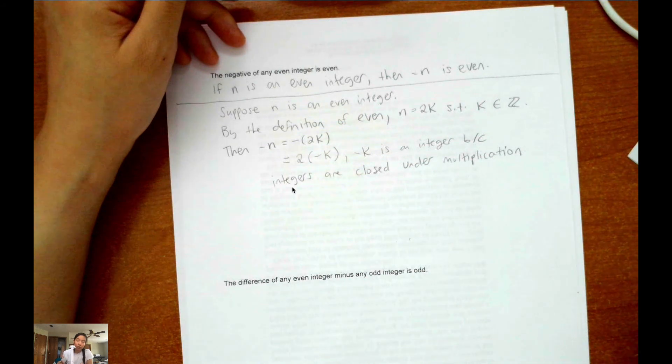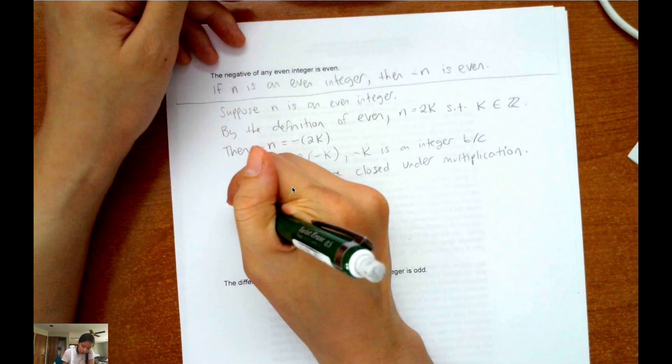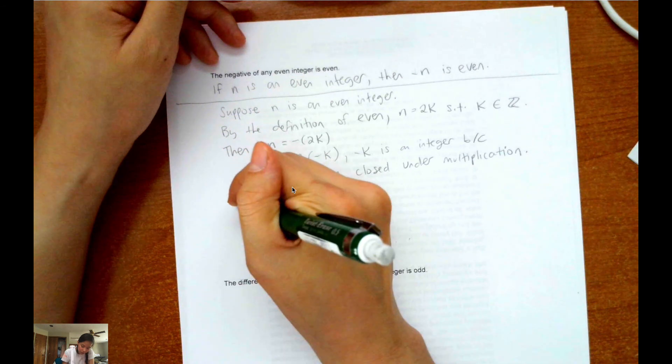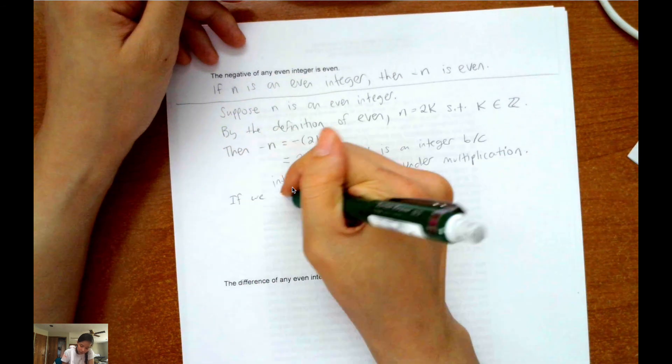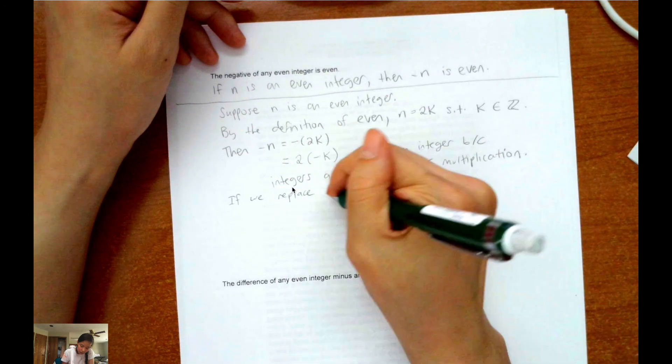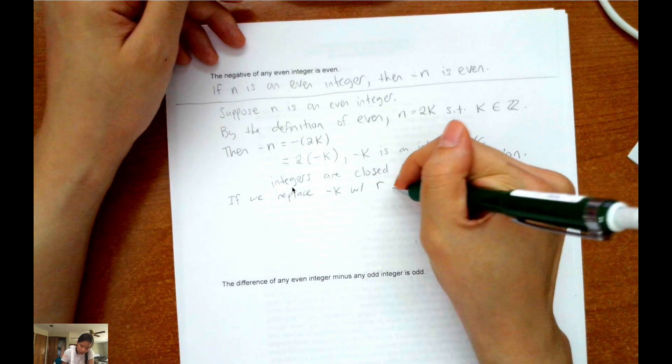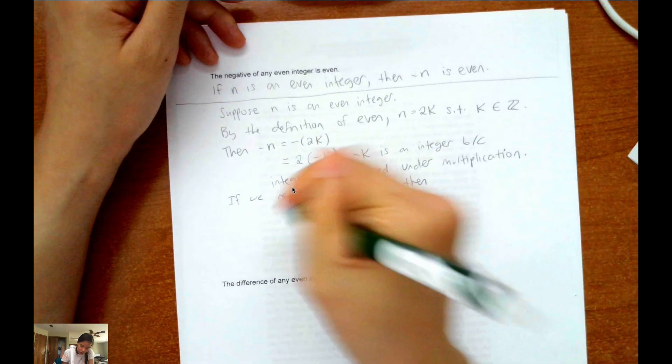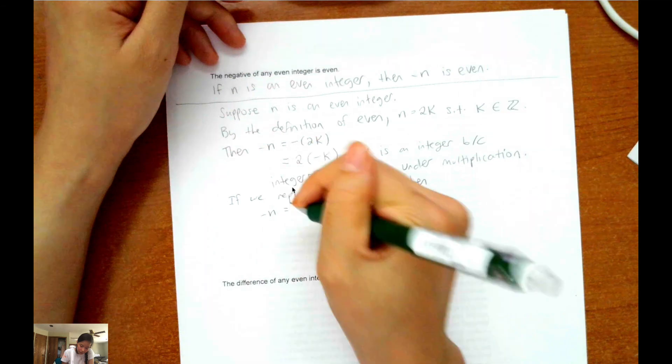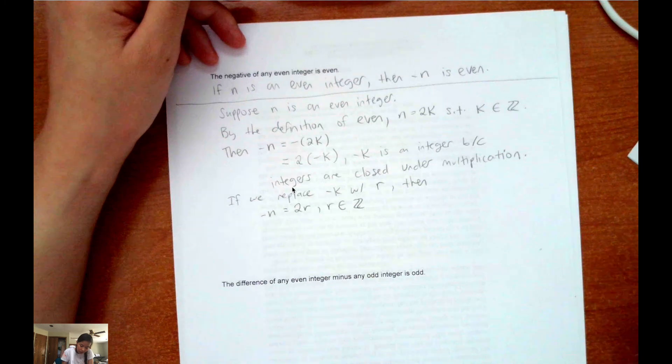that this does not work with division because if I divide integers, that does not always create an integer. Now I can say, if we replace negative k with r, then negative n equals 2r, with r being an integer. And then we could say,